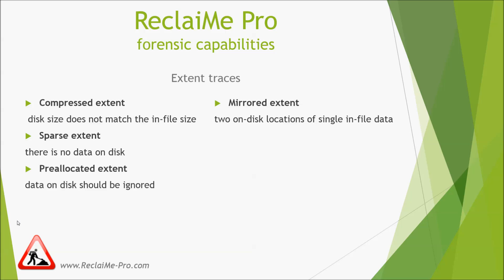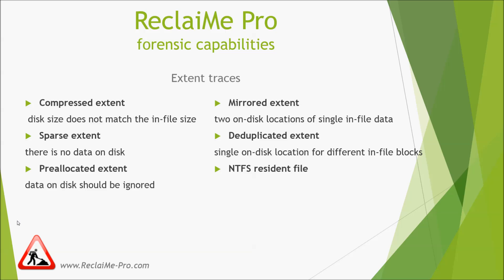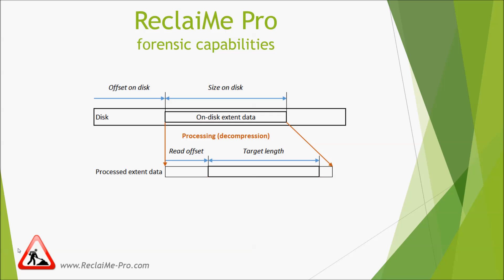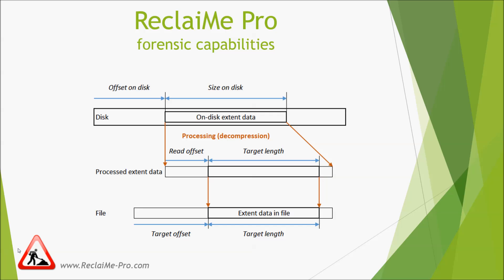A deduplicated file will have a single on-disk location for two different logical file blocks or two different files. An NTFS resident file needs to have generation numbers patched in on-disk data before use. Any of these variants can be described by a scheme including three stages: first, read data from a disk; then, process it to obtain file data; and finally, extract the needed part from the processed data.